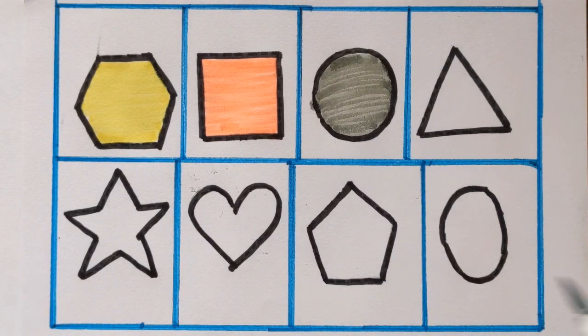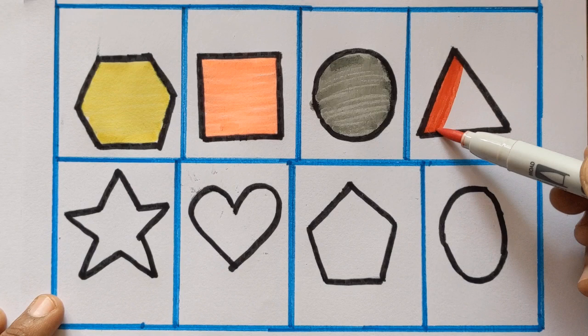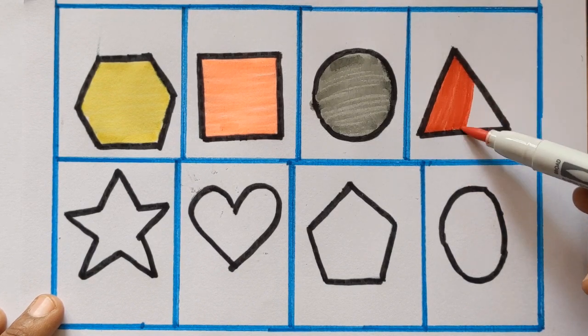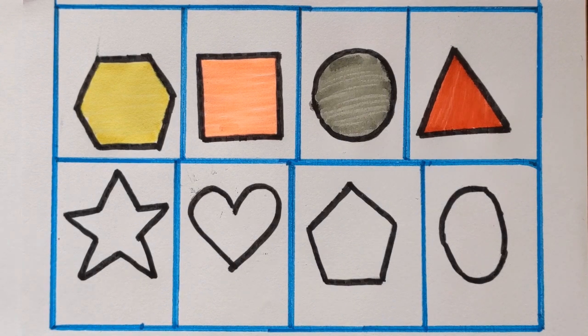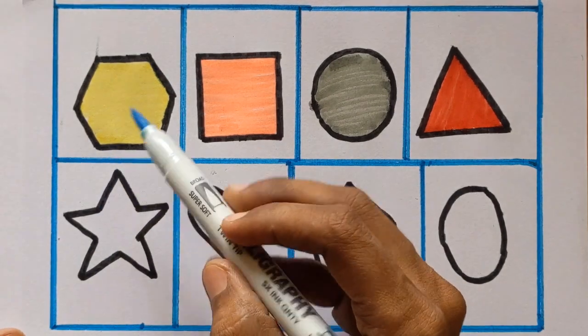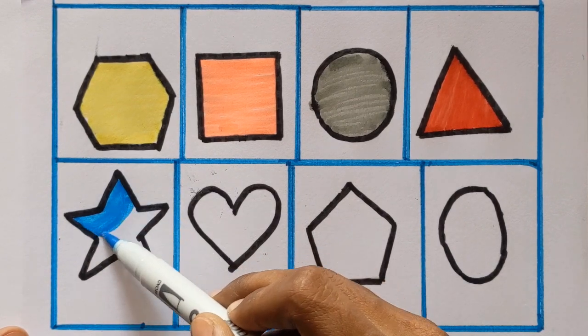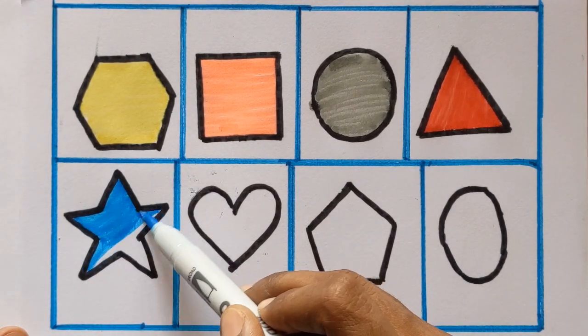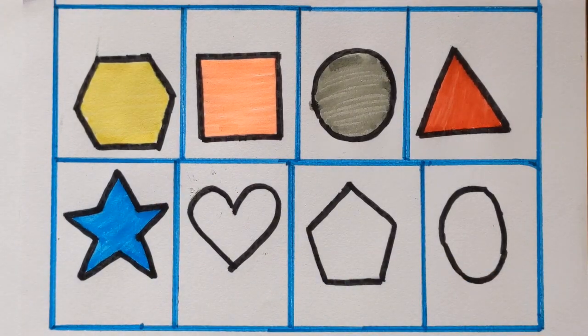Square, orange color. Next shape is blue color. Next shape is star. Star, sky blue color.